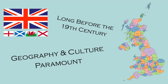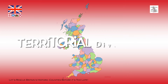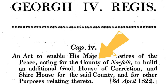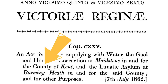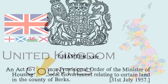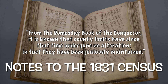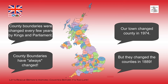While each historic county may have originally been set up for some public purpose or other, long before the beginning of the 19th century it was their geographical and cultural identities that were paramount. No single administrative function defined them. Rather, the counties were considered to be territorial divisions of the country, whose names and areas had been fixed for many centuries and were universally known and accepted. The counties were clearly recognized legal entities, as witnessed by the fact that innumerable acts of parliament made reference to them and used them as the basic geographical framework for various administrative functions. The notes to the 1831 census state that from the Doomsday Book of the Conqueror (1086 AD), it is known that county limits have since that time undergone no alteration — in fact, they have been jealously maintained. Any assertion, therefore, that county boundaries have always changed is completely wrong.